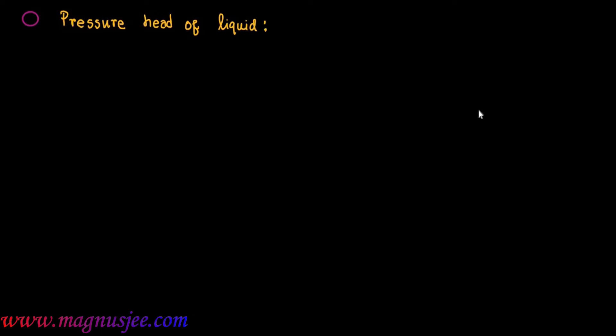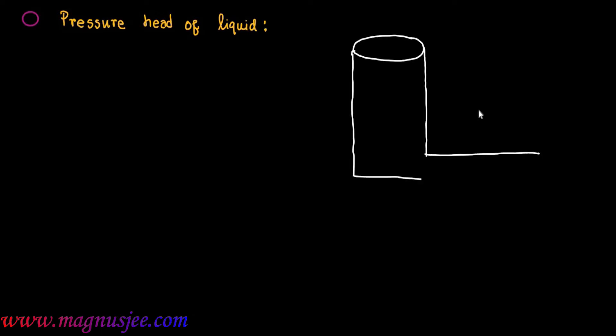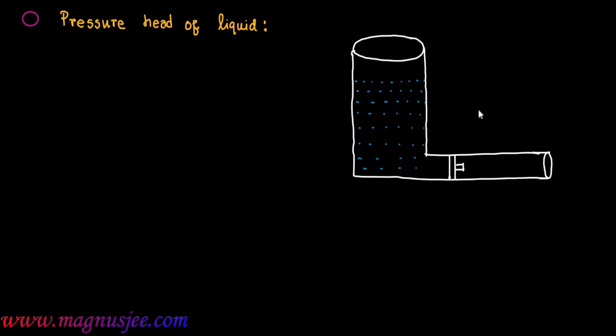Now we can define what is pressure head of liquid. In the diagram, this is a vertical cylinder to which a horizontal pipe is connected at its bottom. A liquid is placed in this vertical cylinder, and a piston is set in the horizontal pipe.